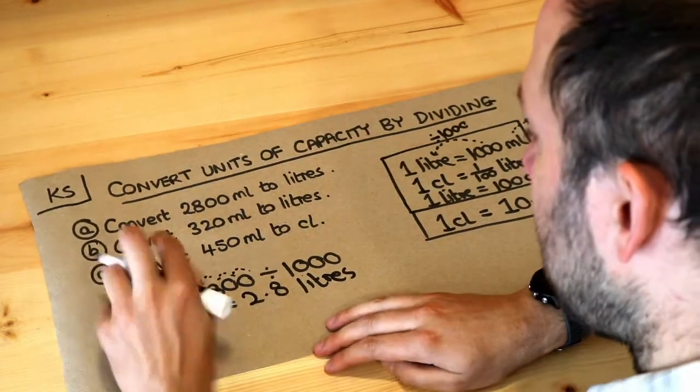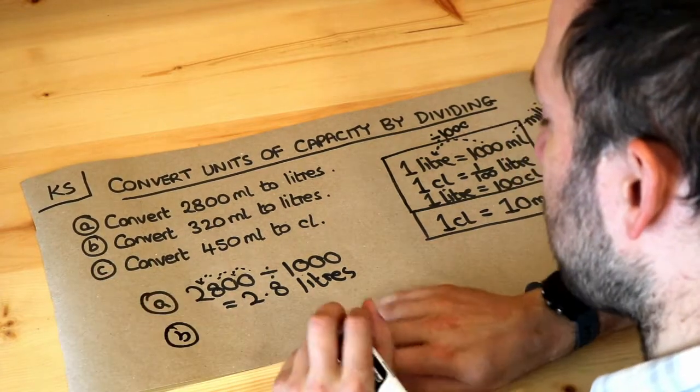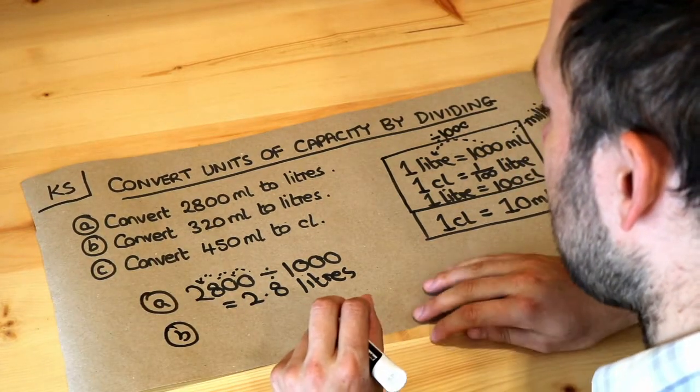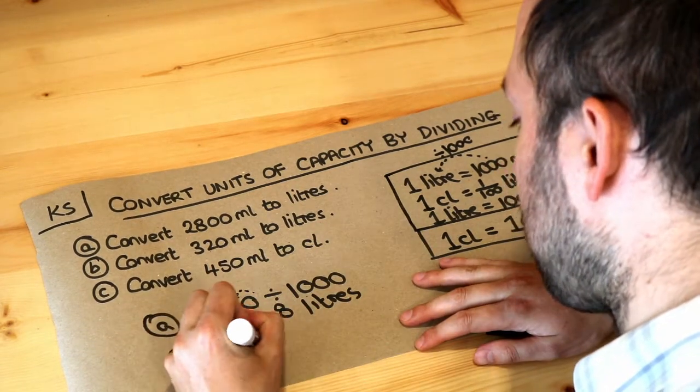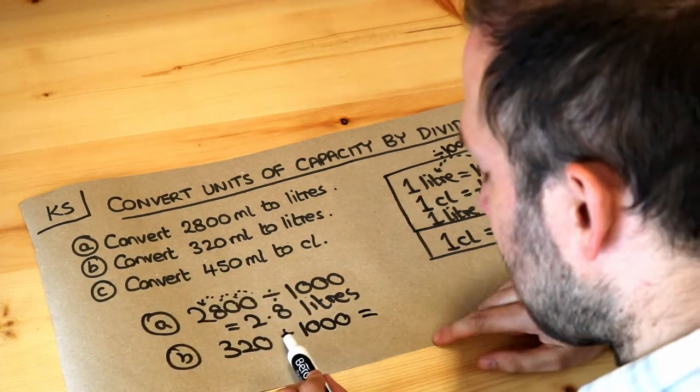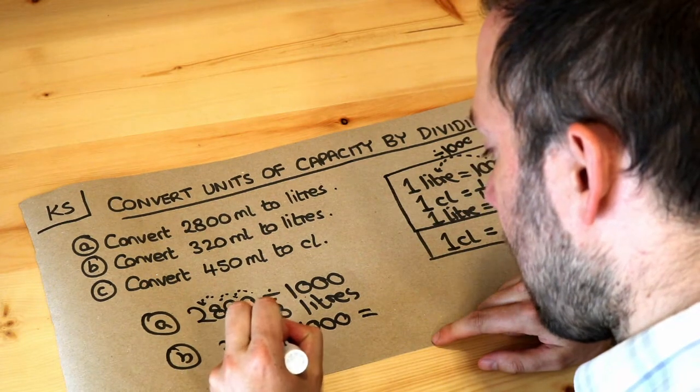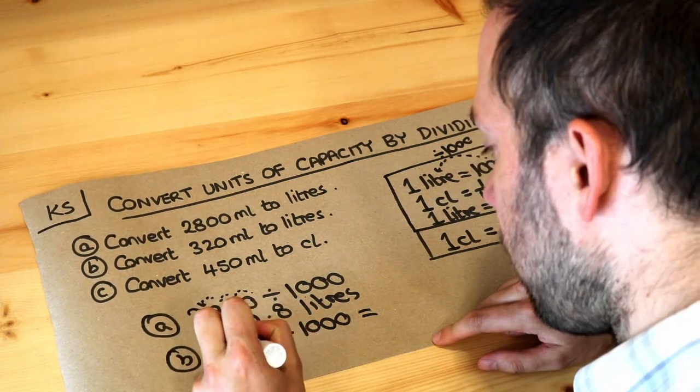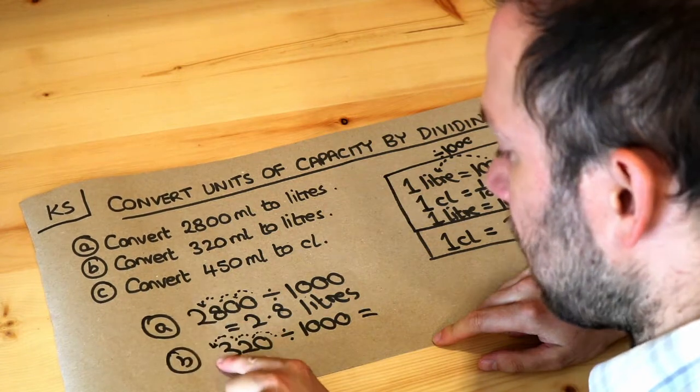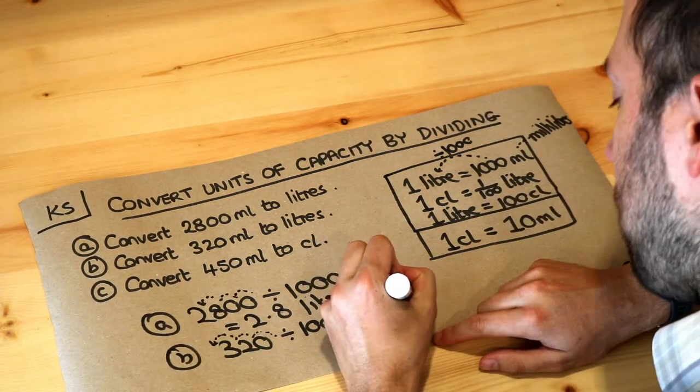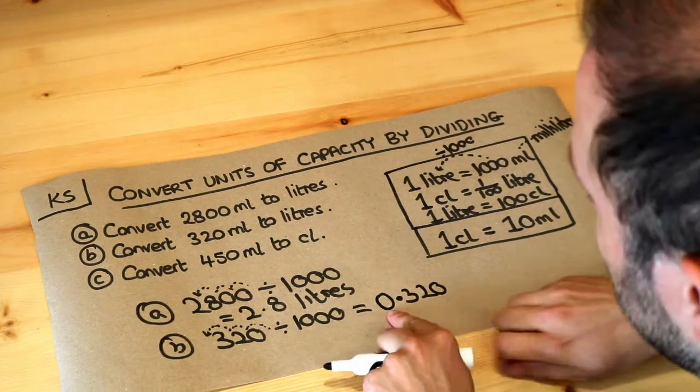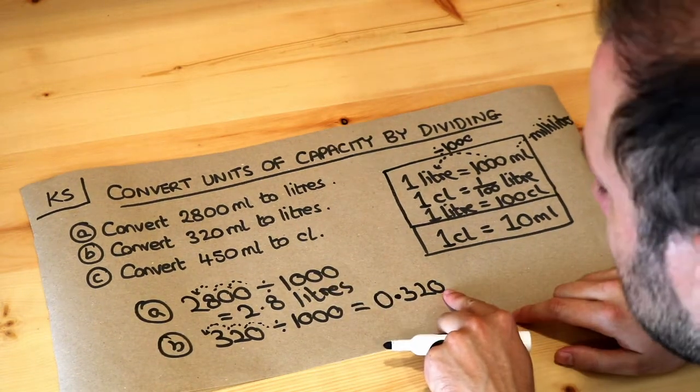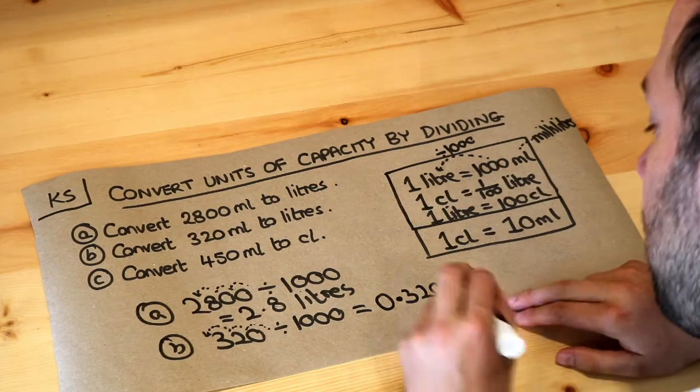What about B? Convert 320 millilitres to litres. So we're going from millilitres to litres again, so we're going to divide by a thousand. And the decimal point is currently here and it's moving one, two, three places. So it's going to be just before the three. So it's going to be 0.320, and we need to put that zero in front of the decimal point. We don't need that zero at the end, so it's just 0.32 litres.